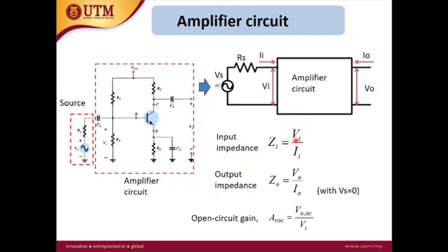The AC analysis of the amplifier circuit is related to what we have discussed in the general model of amplifiers. In the general amplifier model, there are many parameters to consider — one of them is input impedance, another is output impedance, and we also have the open-circuit gain, which determines how much the output is with respect to the input signal.